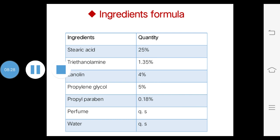Next is perfume, added in quantity sufficient to make the product pleasant-smelling. Finally, water is a very important ingredient in vanishing cream, acting as a vehicle. Water is added in quantity sufficient to make 100%.